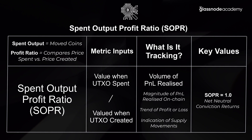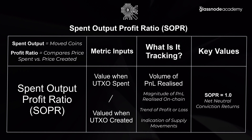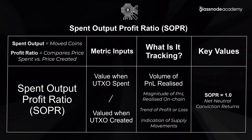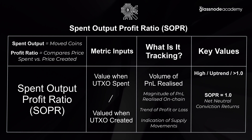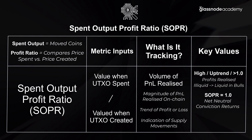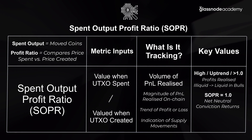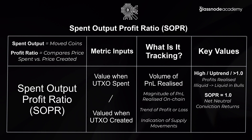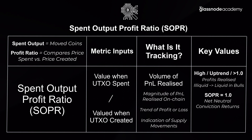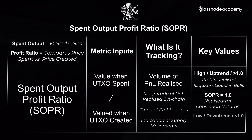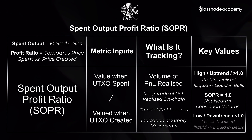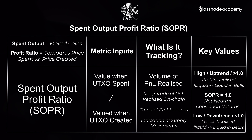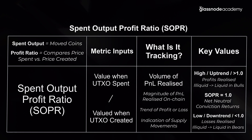A SOPR value of 1 in a bullish pullback means profitable coins have stopped being spent and people are generally sitting and waiting for the next move. When SOPR values are greater than 1, it indicates that profits are being realized — the higher the SOPR value, the more profits are actually being realized. Conversely, when SOPR values are less than 1, it suggests that losses are being realized on-chain, and the deeper the value falls below 1, the larger the losses.